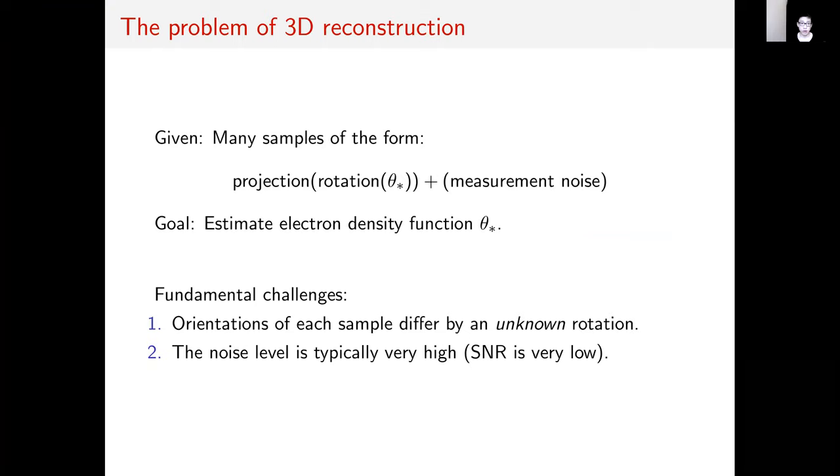From an abstract point of view the problem takes the following form. Given an unknown electron density function θ* we take samples as follows. A rotation and projection are applied to the density and then we record a sample after some measurement noise. From these very noisy samples our goal is to estimate the unknown density function θ*.